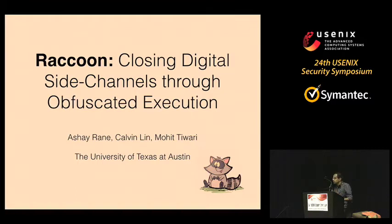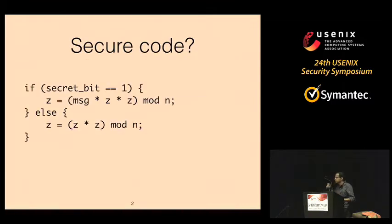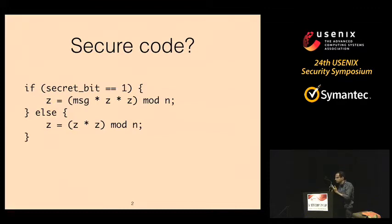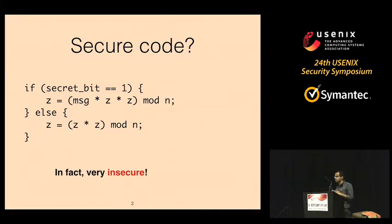Let me give you a big picture. Let's look at this code. It is essentially checking the value of a secret bit. If the secret bit happens to be one, it does some arithmetic; otherwise it does some other arithmetic. If we assume the adversary does not have direct access to the memory location which stores the value of secret bit, can we still say the adversary will never be able to find out its value just by observing the program execution? As it turns out, this code is indeed very insecure — this extremely small code snippet has been demonstrated in many prior research works to leak side channels.